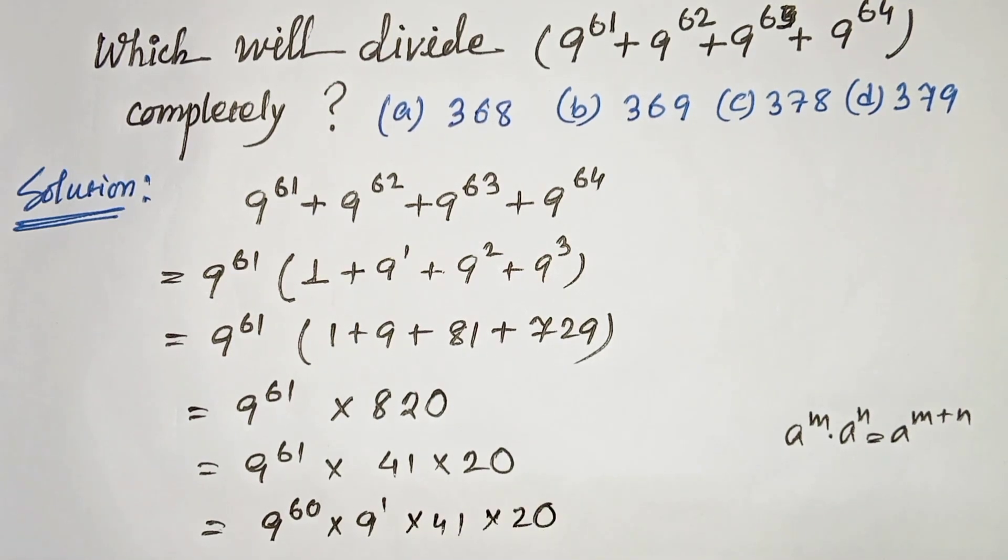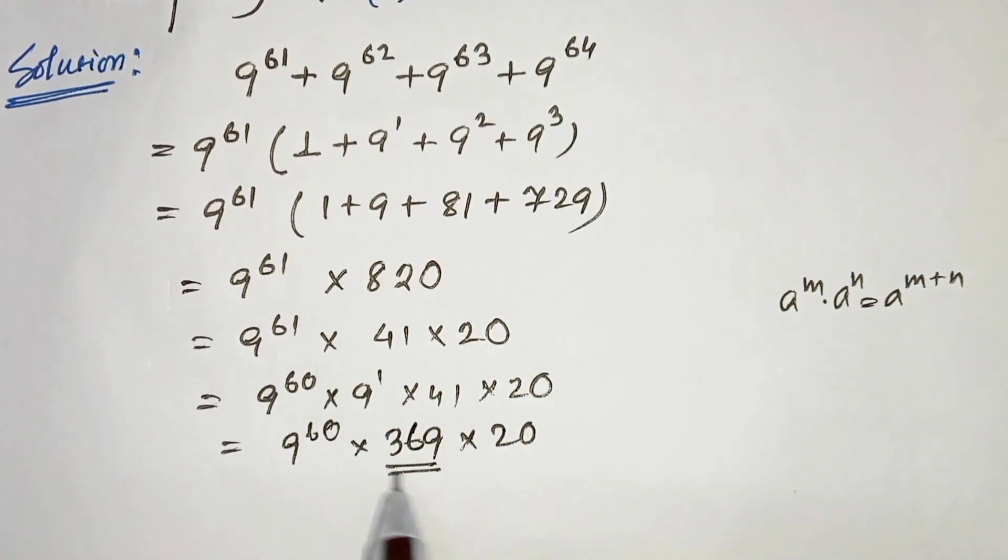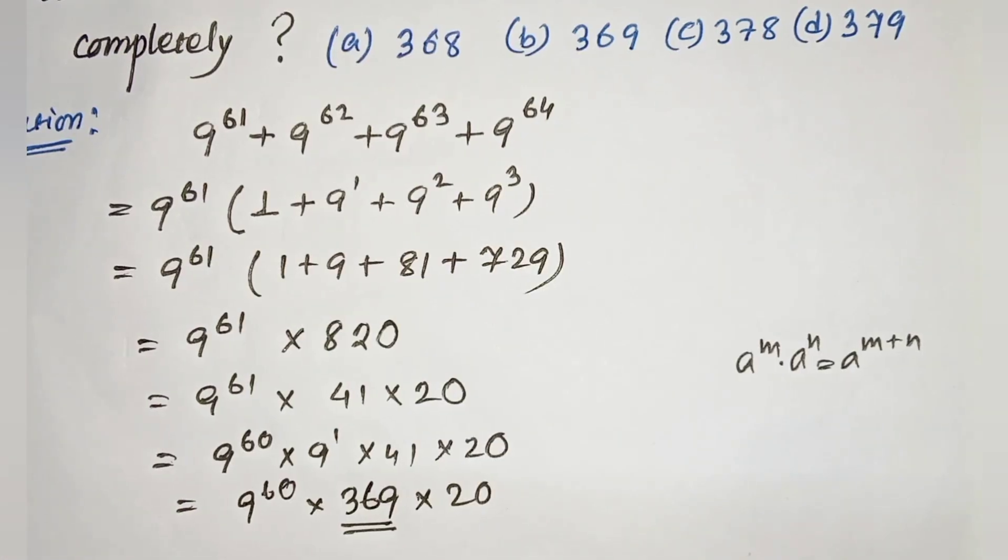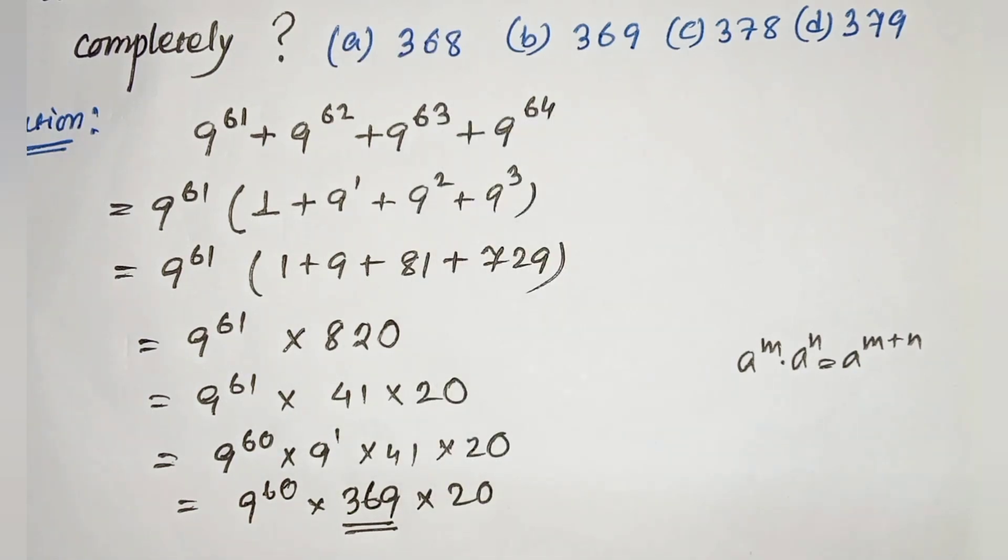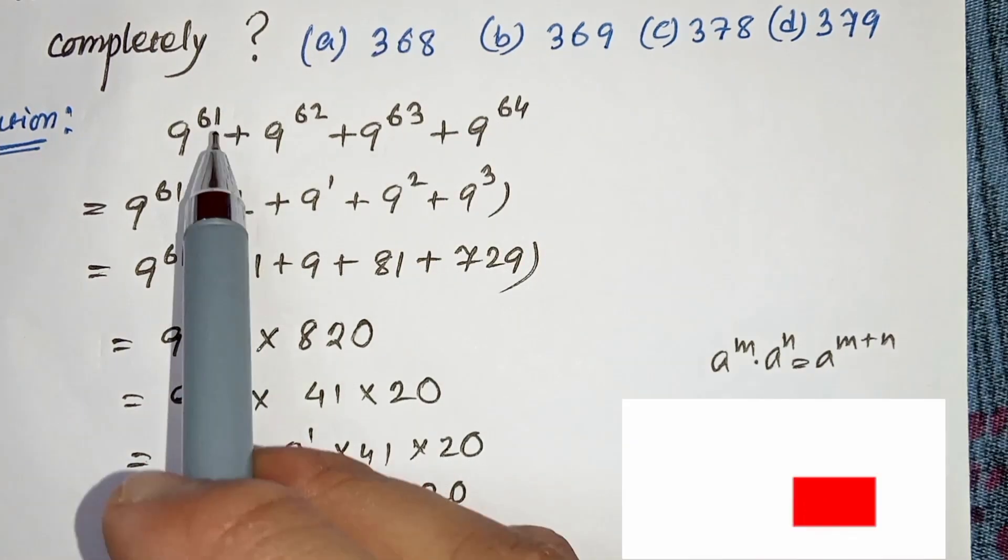41 times 20. Now if we multiply this, we will get 9 times 41 which is 369. And in our option we have 369. So 369 will completely divide these.